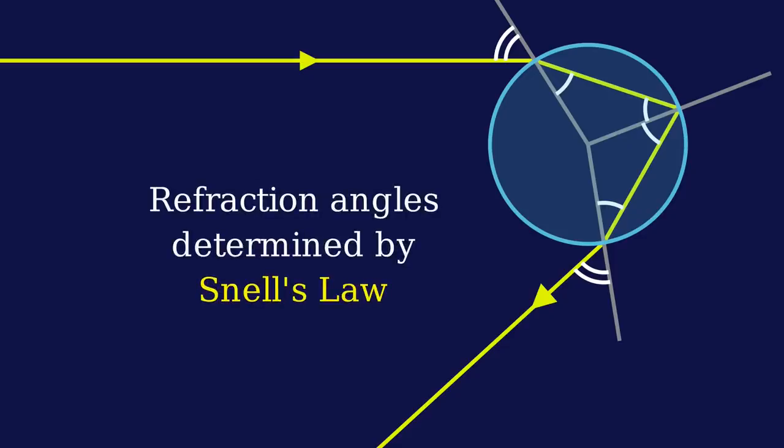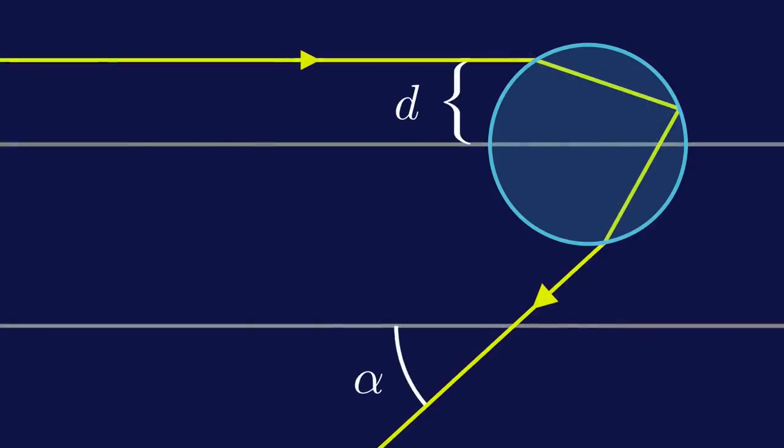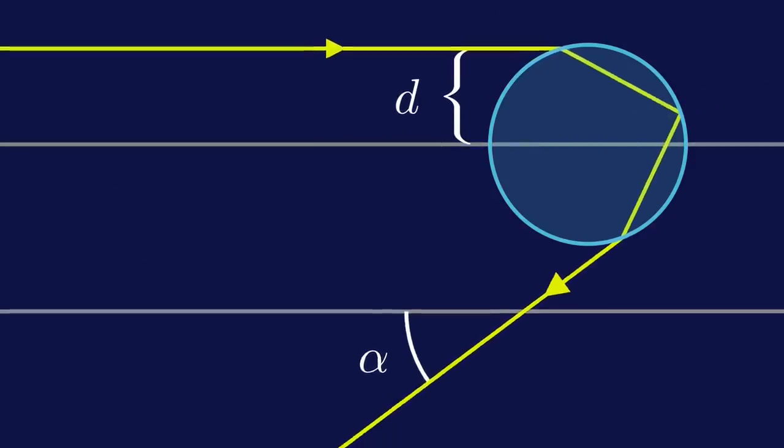If you know some trigonometry, it's actually a good exercise to calculate these angles. We won't need exact formulas for this explanation to make sense, but if you manage to do this exercise, you'll notice that the angle of the outbound ray depends on how far from the center the inbound ray hit the raindrop.